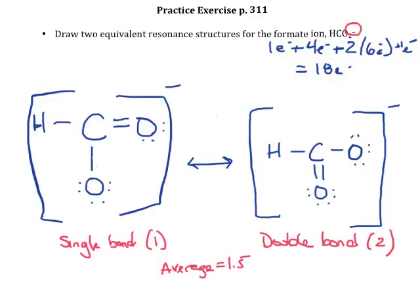So what is going to be true about this bond is that it's not going to be as long as a single bond, it's not going to be as short as a double bond, it's actually going to be between those two, an average of those two bonds. So remember that neither of these is the true structure of the molecule, the true structure is an average of both structures.